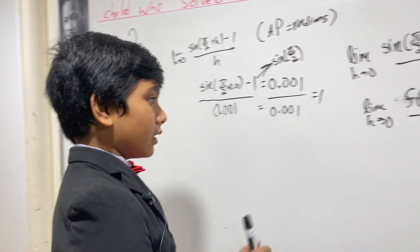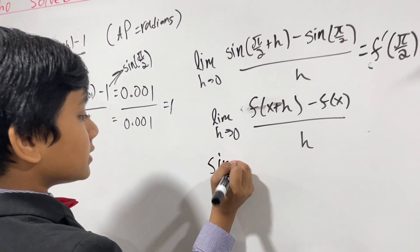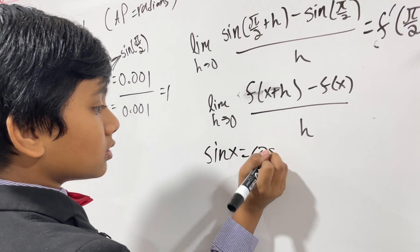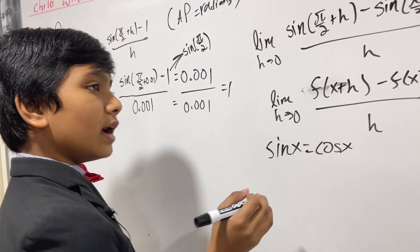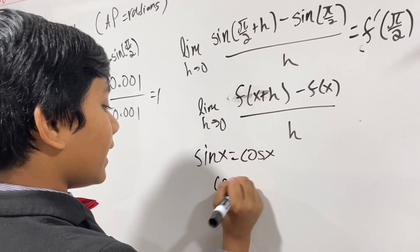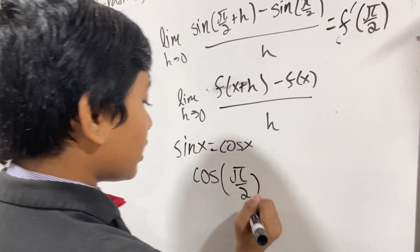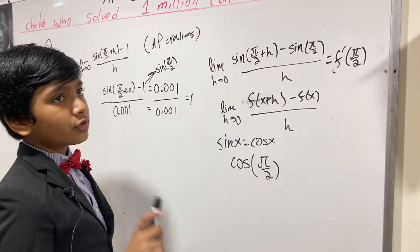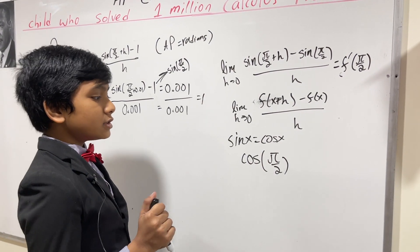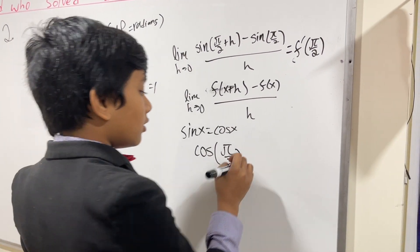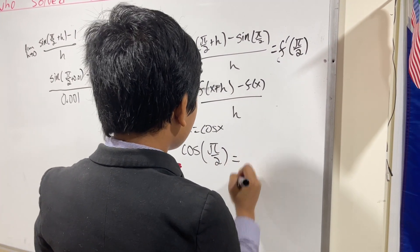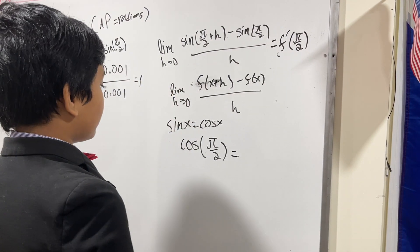Alright, so now what is the derivative of sine of x? Well, that's equal to cos x. And what will happen when we plug in pi over 2? Well, cosine of pi over 2, pi over 2 is 180. So plugging in 180 to pi over 2 gives you...